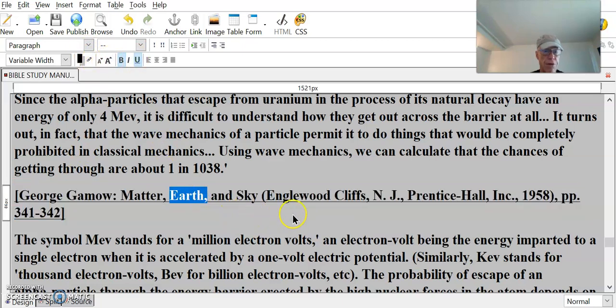The symbol for MeV stands for a million electron volts, an electron volt being the energy imparted to a single electron which is accelerated by a one-volt electrical potential. Similarly, KeV stands for a thousand electron volts, BeV for a billion electron volts, and so on.